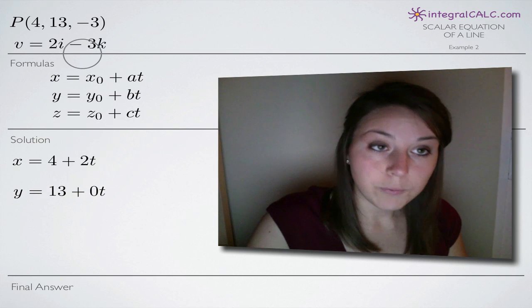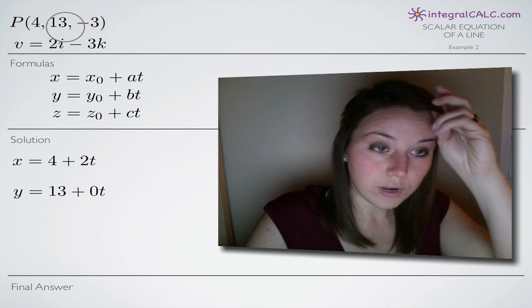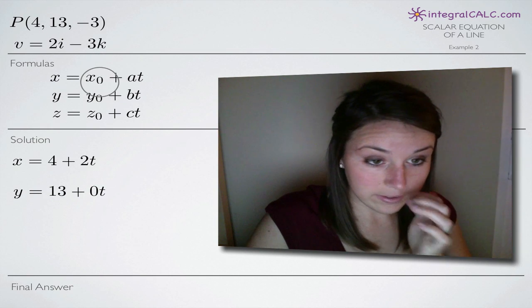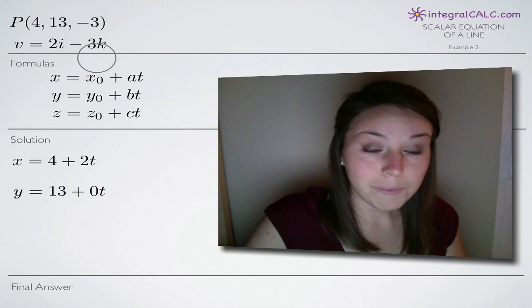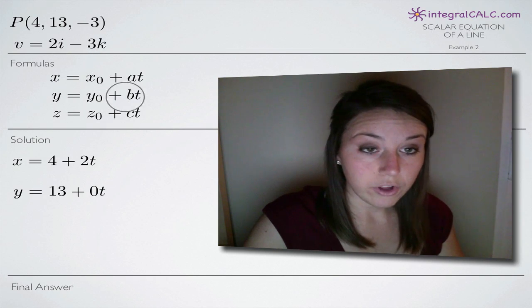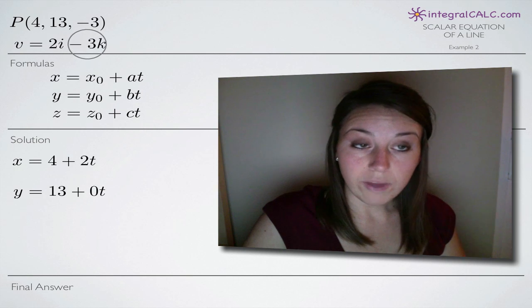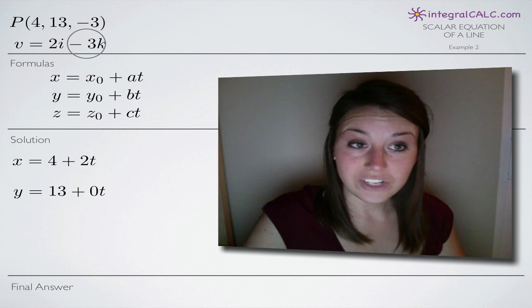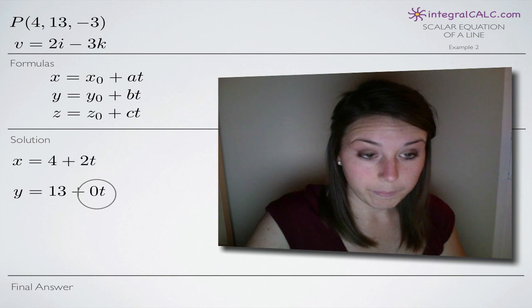For y, we'll plug in our y coordinate from the point P, 13 for y sub zero and then we'll plug in the coefficient on our j term in our vector for b. In this case, we don't have j in our vector so the coefficient on it is zero so we plug in zero for b.